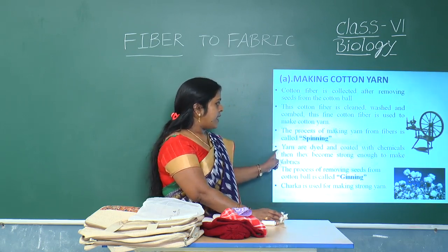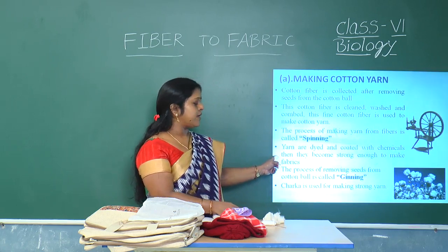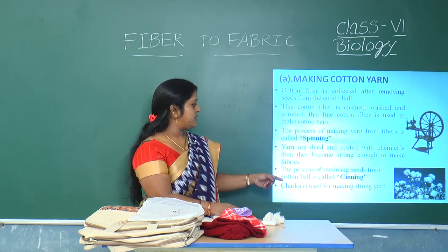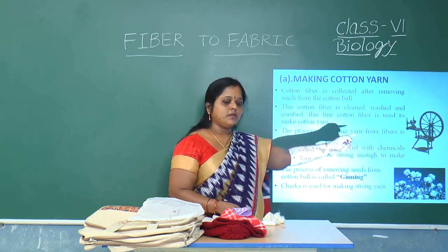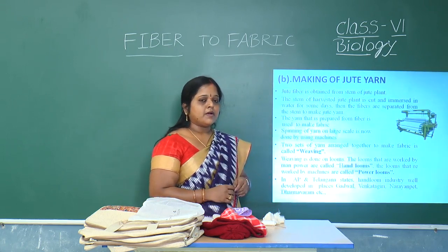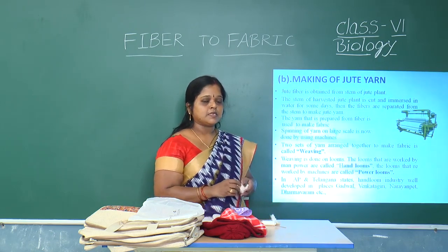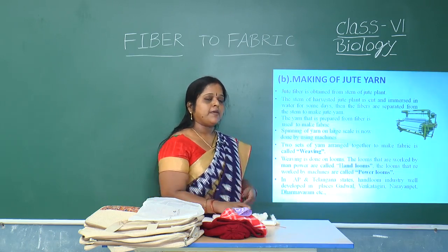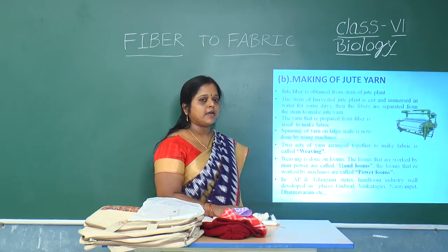Yarns are dyed and coated with chemicals, then they become strong enough to become fabrics. The charka is used for making strong yarn. In the olden days, the instrument used for spinning was called a takli. Even Mahatma Gandhi, during the freedom struggle, encouraged people to use only khadi cloths.